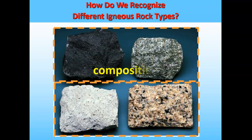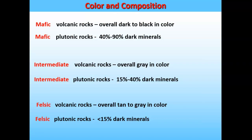We're also going to look at composition. Color is going to help us with composition — we'll look at light and dark. Darker rocks have different minerals; lighter rocks have other common minerals. The composition terms we use for igneous rocks are mafic, intermediate, and felsic. For volcanic rocks, it's easier — we use overall color. Dark black rocks are typically mafic; they have a lot of iron and magnesium, which produce dark minerals, so the rock has an overall dark appearance.